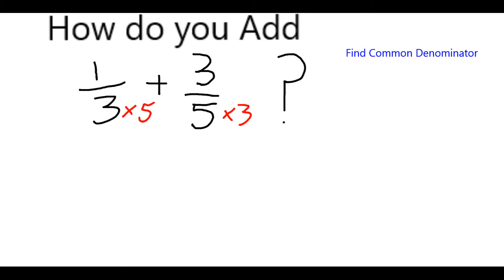I can do so by multiplying 3 times 5 and 5 times 3. But then to keep the fraction equivalent, I need to do the same thing to the top as I've done to the bottom in each case. So I'm going to do 3 times 3 over 5 times 3, which is going to be equal to 9 fifteenths.